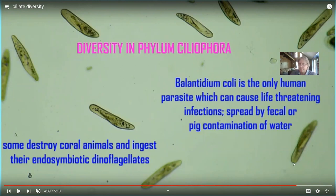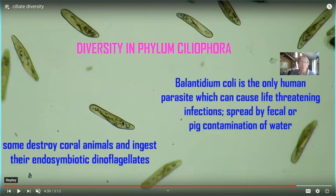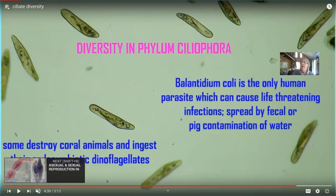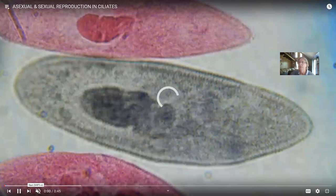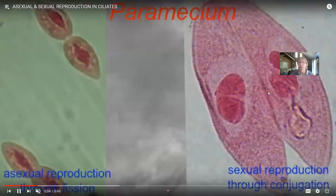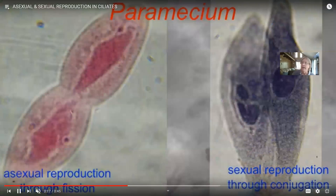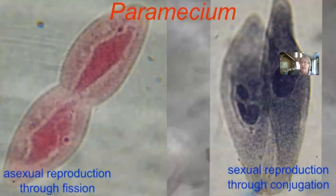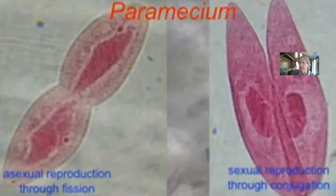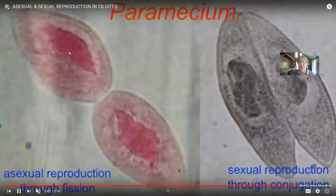There is even one ciliate capable of causing human infections which can be potentially life-threatening. Ciliates can reproduce sexually as well as divide asexually. Under the microscope, one can distinguish between fission — the asexual reproduction seen on the left — versus conjugation, the sexual reproduction on the right. Something often observed in the wild is that a species might reproduce asexually most of the time, but a harsh environment might trigger sexual reproduction. We can find both forms of reproduction in ciliates.